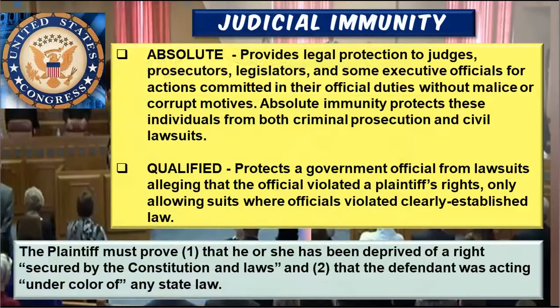What is judicial immunity? There are two types: absolute immunity and qualified immunity. Absolute immunity applies to a judge confirmed for life — you cannot remove them or file a lawsuit against them. Qualified immunity has certain criteria.